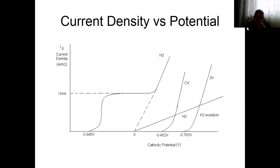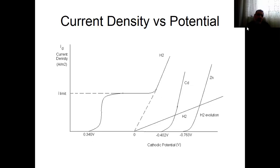But after manganese, it is impossible for us to produce metals by aqueous electrolysis processes. Instead, we need to apply fused salt electrolysis or molten salt electrolysis — like aluminum. Aluminum can be produced by molten salt electrolysis.